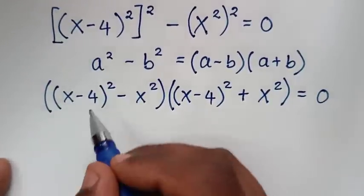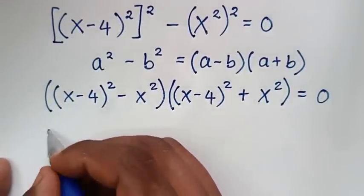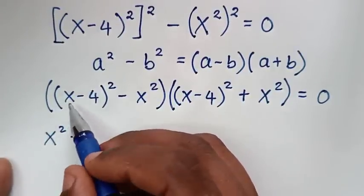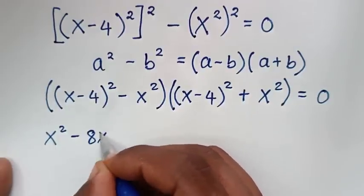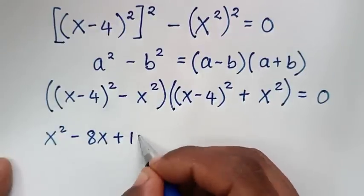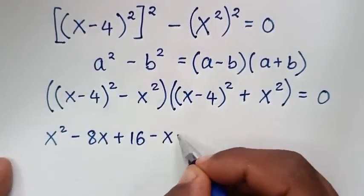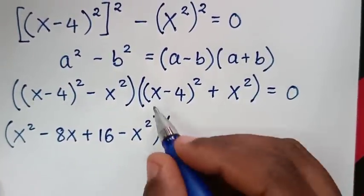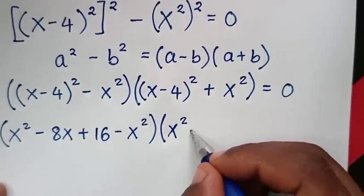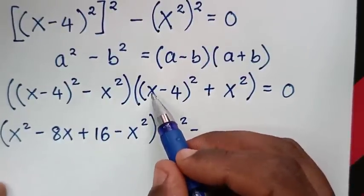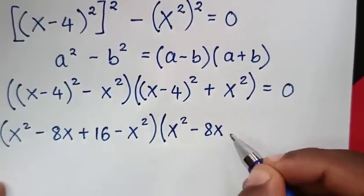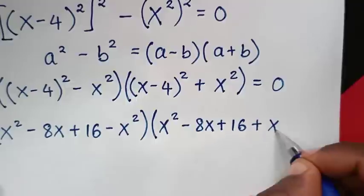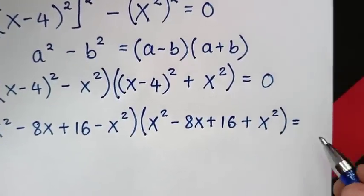In the next step, we expand (x minus 4)². It will be x² minus 2 times x times 4, which is 8x, plus 4 squared which is 16. So we have (x² minus 8x plus 16) minus x², multiplied by (x² minus 8x plus 16 plus x²), equal to 0.